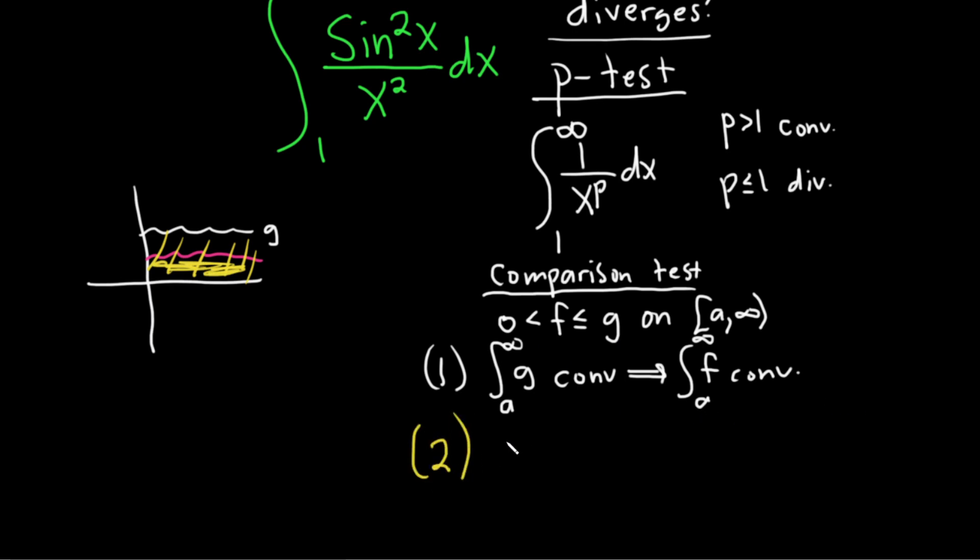Conversely, we could say that if the improper integral of f diverges, well, if it doesn't have a finite area and g is bigger, then g should also certainly not have a finite area. So then g also diverges.